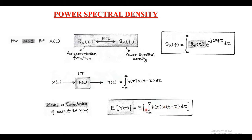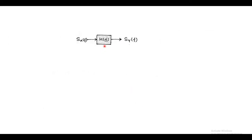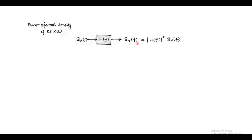This mean value of the output random process is in the time domain. In the frequency domain representation, the LTI system has impulse response H(f), with the input represented as power spectral density S(f). The random process is considered as a wide sense stationary random process. The output of the LTI system in the frequency domain is given as S(f) equal to the product of the square of the magnitude of the impulse response spectrum and the input power spectral density.